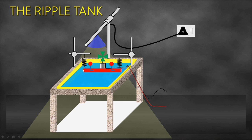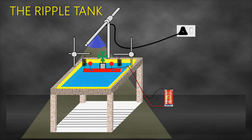If you have the plane dipper touching the water surface and connect a battery — a dry cell — we are going to end up with plain or straight wavefronts being produced. Those plain wavefronts will have their shadows formed on the screen, and we can easily see the shadows from here.